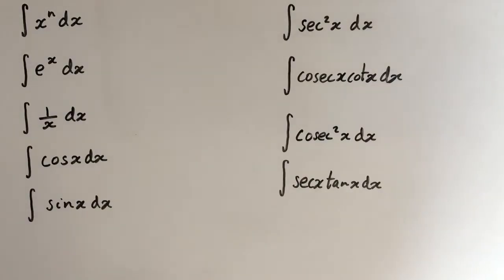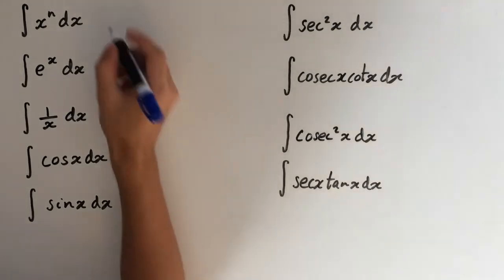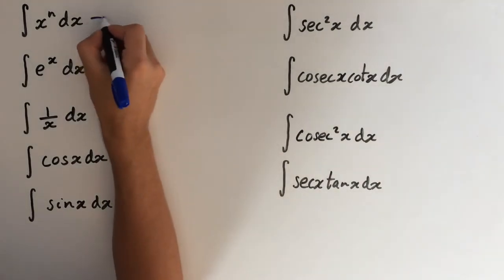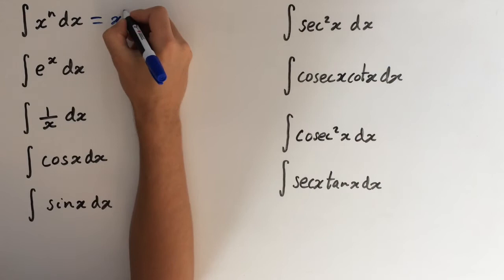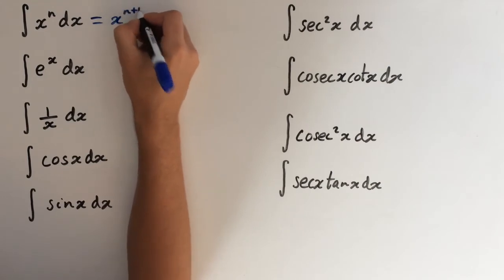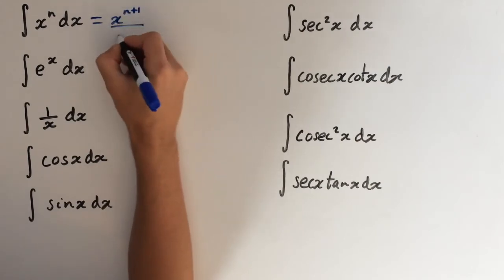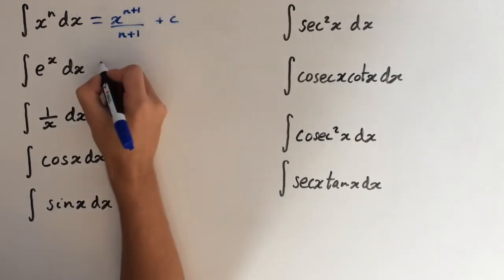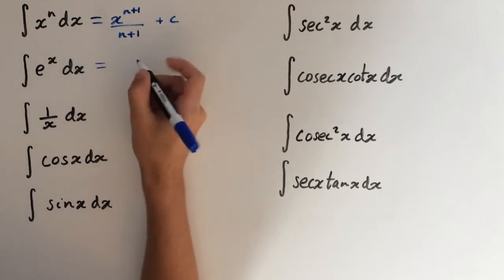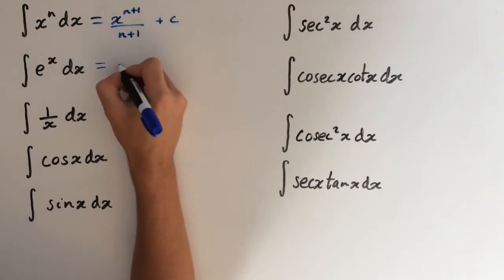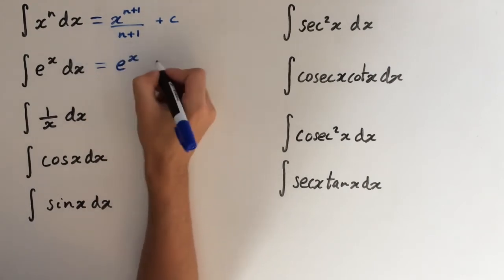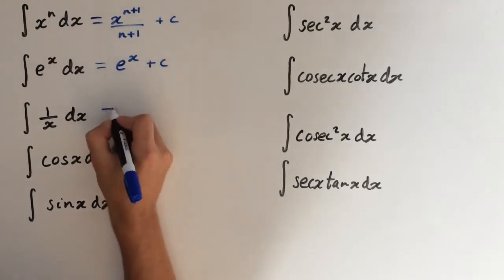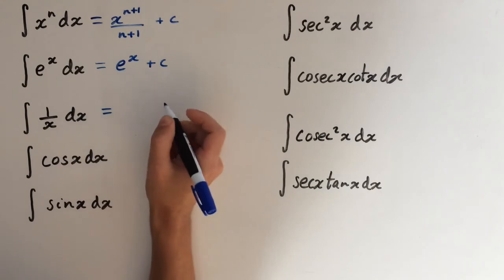Hey guys, in this video I'm going to show you the results with some standard integrals, so let's get straight into it. The integral of x to the n is x to the n plus 1 over n plus 1 plus c. The integral of e to the x is just e to the x plus c. The integral of 1 over x is the natural logarithm of the absolute value of x plus c.